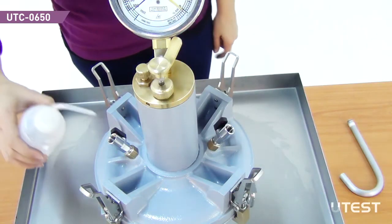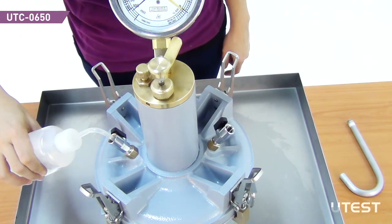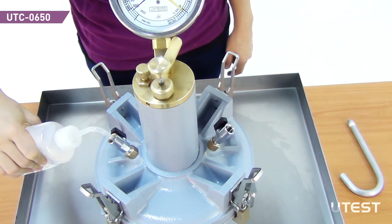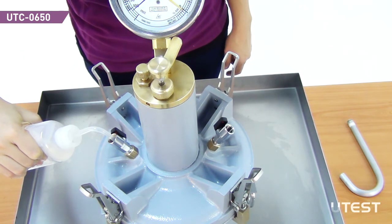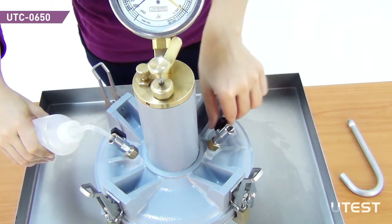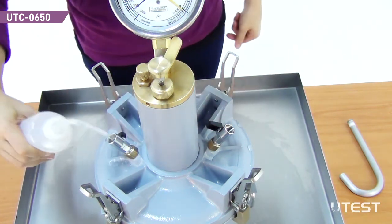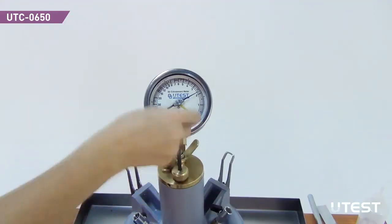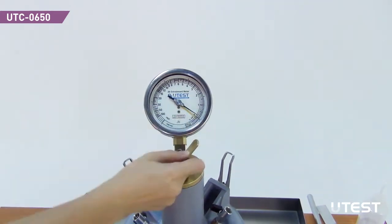Inject water through the petcock having the extension until all air is expelled and water bleeds from the second petcock and close them. Pump air into the air chamber until the gauge hand is stabilized at the initial pressure line.